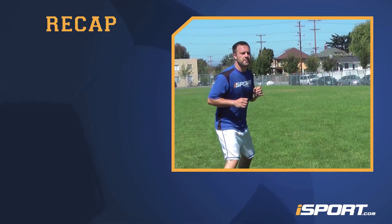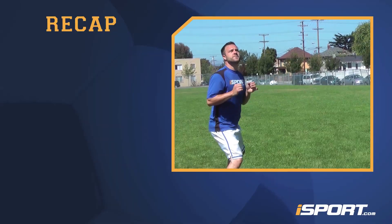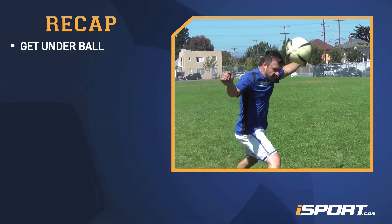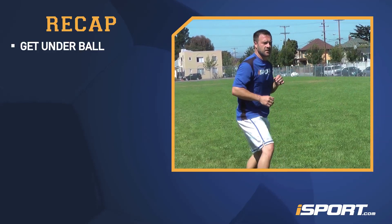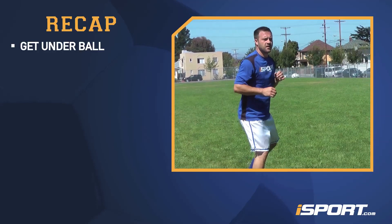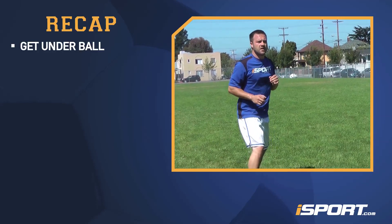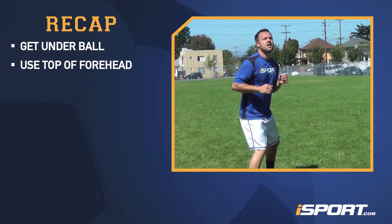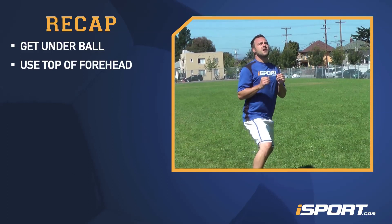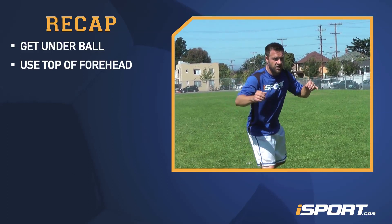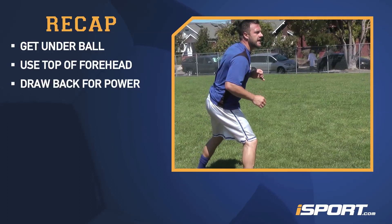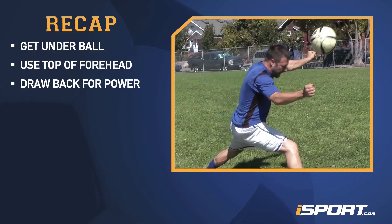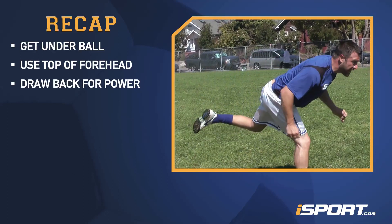Here's a recap of the header technique. Position yourself under the ball as much as possible, rather than bending over to one side to meet it. Strike the ball with the top of your forehead, just about where your hairline begins. For a more powerful header, draw your head back and quickly push it forward into the ball.